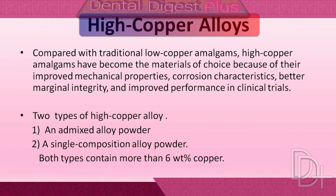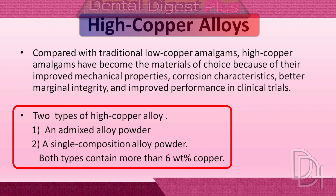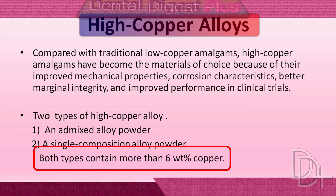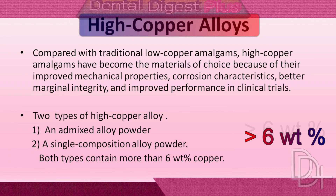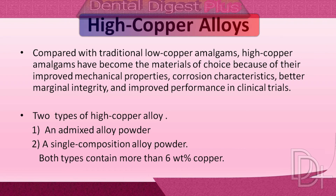Now let's understand the setting reaction in high-copper alloy. There are two types of high-copper alloy: an admixed alloy powder and a single-composition alloy powder. Both types contain more than 6 weight percent copper. In single-composition alloy powder, each particle has the same chemical composition; therefore they are called single-composition alloys.